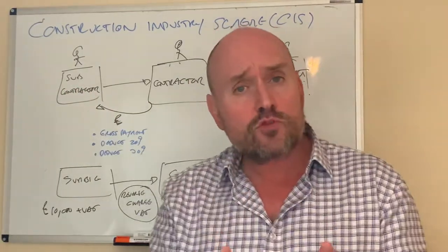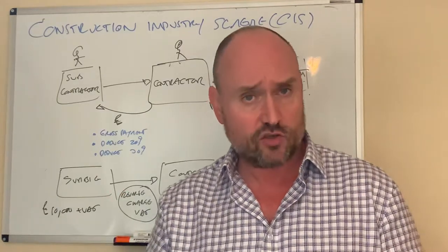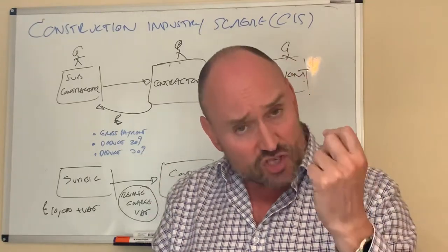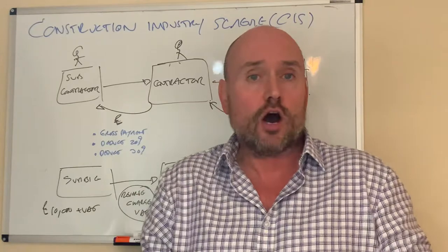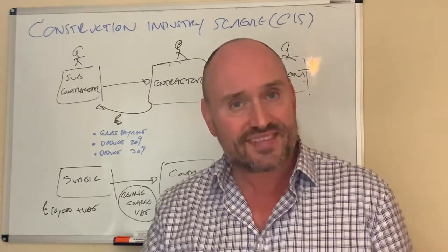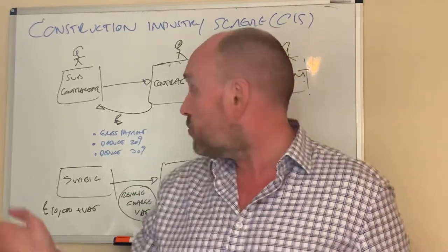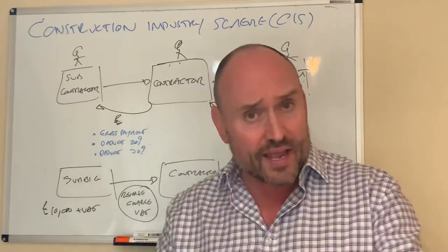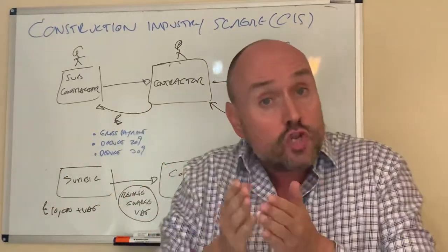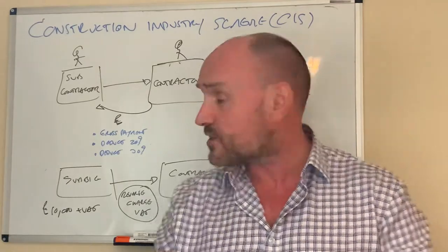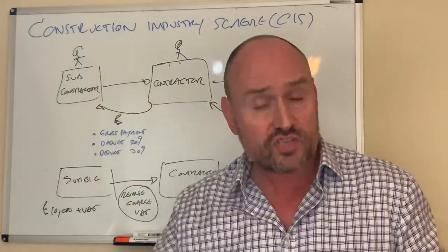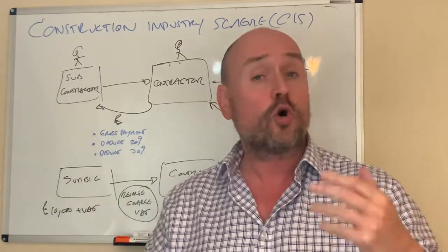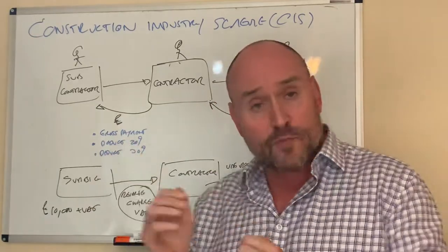So the contractor is collecting the tax on behalf of the subcontractor. Now, in terms of does this happen to all subcontractors? No, it doesn't. If the subcontractor has been in business for long enough and is of a certain size and can prove that they are competent enough with their taxes, then HMRC will grant them gross payment status. So once they have this gross payment status agreed by HMRC, that means that the contractor does not have to withhold any tax to pay over to the taxman and he can pay the subcontractor gross. And then the subcontractor reckons up with the taxman at the end of the year via self-assessment or corporation tax return. That's if they have gross payment status.